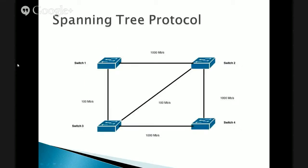If you're dealing with unmanaged switches, they don't have any way of dealing with a loop. But with managed switches, we have something we can use to protect ourselves from this loop — and in some ways protect ourselves from ourselves. What we have in the managed switch environment is something called the Spanning Tree Protocol.